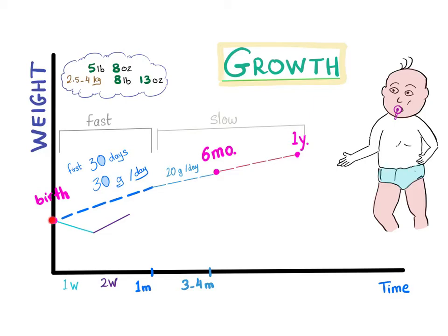The birth weight is doubled by the 6th month and is tripled by the first year. At birth, double at 6 months, triple at 1 year.